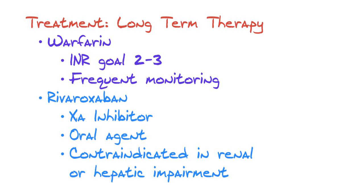Once the INR goal of 2–3 is reached, we can stop the bridging agents. Drawbacks with Coumadin include bleeding risk and the need for frequent INR monitoring to stay in the therapeutic range. Newer therapies are available — Pradaxa, a thrombin inhibitor, and Rivaroxaban, a factor Xa inhibitor — which do not require frequent monitoring. These are oral agents, but they're contraindicated in renal or hepatic impairment, so kidney and liver function must be monitored. They're already used for AFib, and studies with PEs are ongoing.